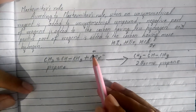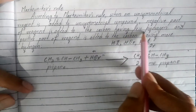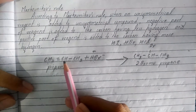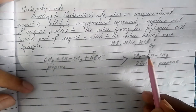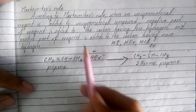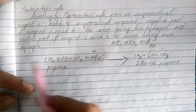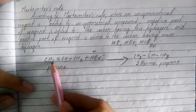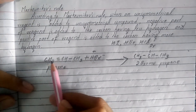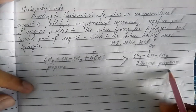The negative part of the reagent is added to the carbon having less hydrogen. Negative Br goes to the carbon that has less hydrogen — that is where Br is added. And the positive part, hydrogen, goes to the carbon having more hydrogen, which is CH3. The product is 2-bromopropane.